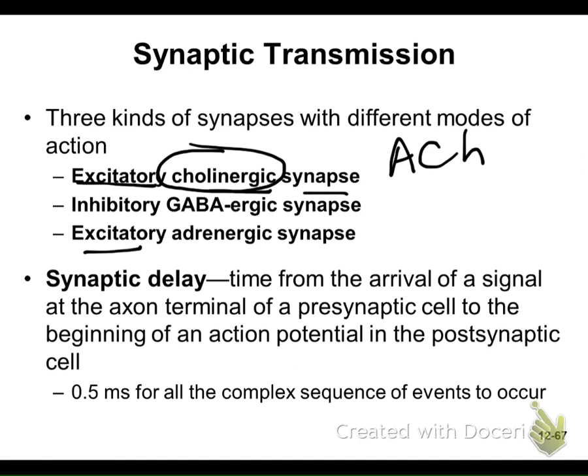Does it make sense that it takes time for all this to happen? It takes time for the electrical signal to come down, time for the neurotransmitter to be released, time to cross the cleft, to be picked up by the post-synaptic receptor, and then to initiate the response. Therefore, every time there's a chemical synapse, there's going to be a slight delay. We're talking milliseconds — amazingly fast — but still, the more synapses, the longer the signal will take to travel from one point to another.